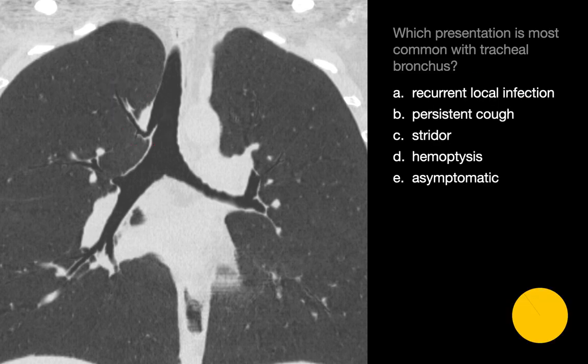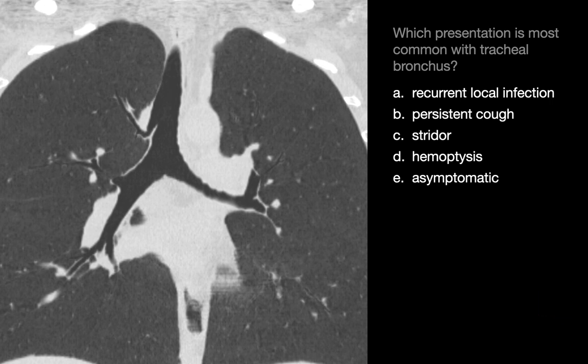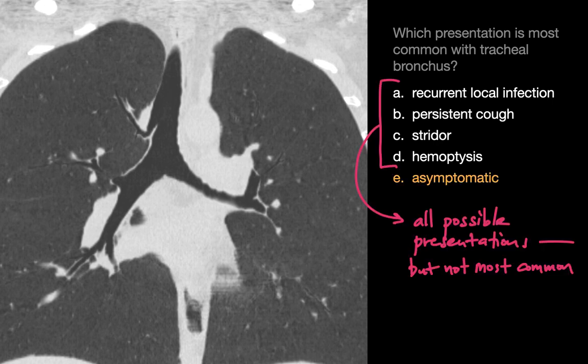Which presentation is most common with tracheal bronchus? While recurrent local infection, persistent cough, stridor, and hemoptysis are all possible presentations of tracheal bronchus, the most common presentation is no symptoms at all.